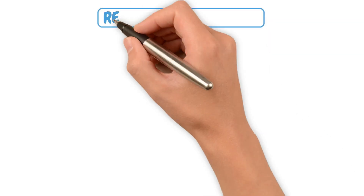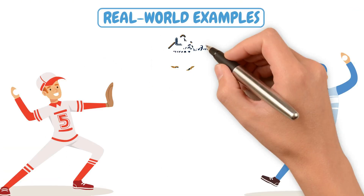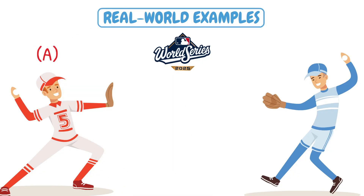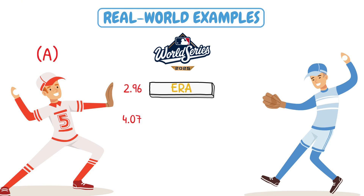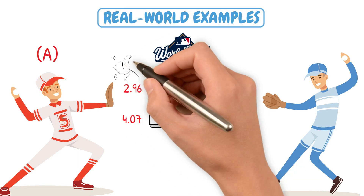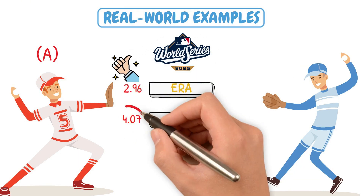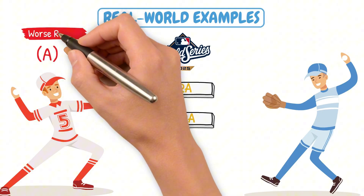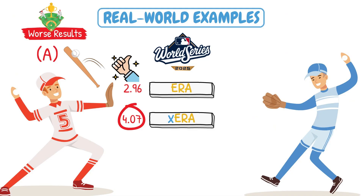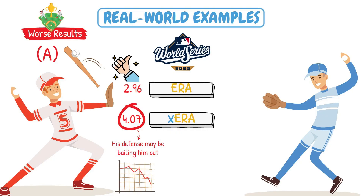Here's a quick look at how you can use this stat in action using two examples from pitchers during the 2025 season. Pitcher A sported a 2.96 ERA, but a 4.07 xERA. This pitcher saw good results, but his xERA tells us that his contact quality allowed should have shown worse results. This tells us his defense may have been bailing him out, and he may be due for regression in the future.